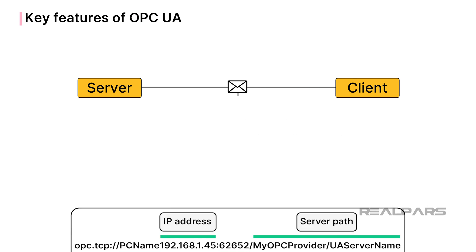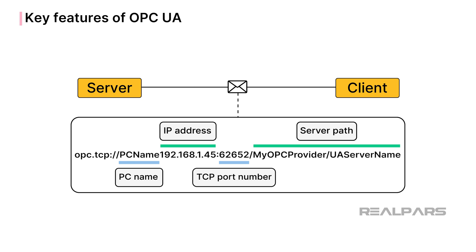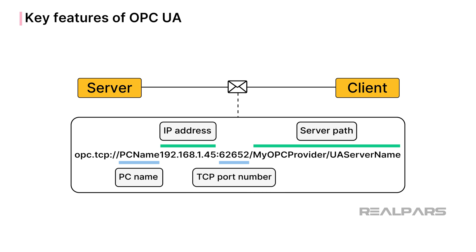A typical OPC UA subscription link has a specific format. The link will point the OPC UA client directly to the OPC UA server at the location configured in the link. Notice that the link identifies the PC name, IP address, and TCP port number at which the OPC UA server can be reached.